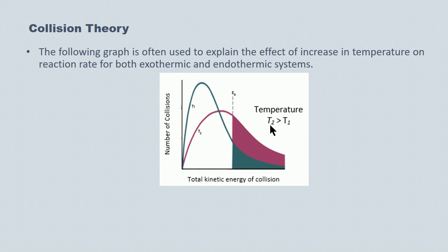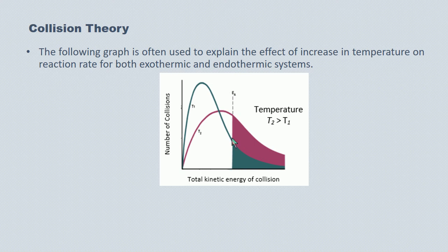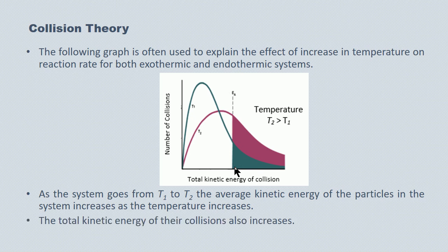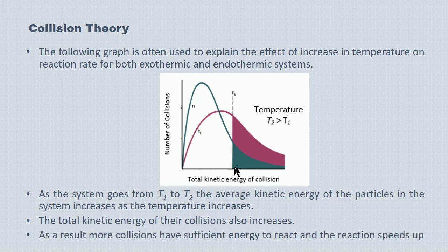By analogy, particle collisions at a higher temperature have a higher average kinetic energy than at a lower temperature. Considering the entire shaded area under the graph, these are all collisions at the higher temperature that have enough kinetic energy to give rise to effective chemical change. There are a great deal more collisions at a higher temperature — represented by the total shaded area — that could possibly give rise to chemical change than at the lower temperature, which is represented by a much smaller shaded area. As the system goes from T1 to T2, the average kinetic energy increases, more collisions have sufficient energy to react, and the reaction speeds up.